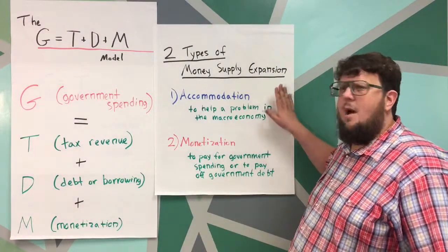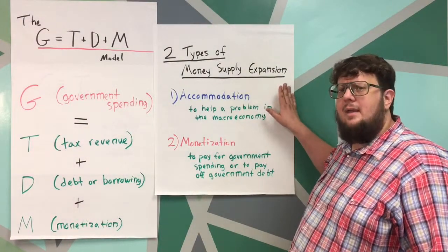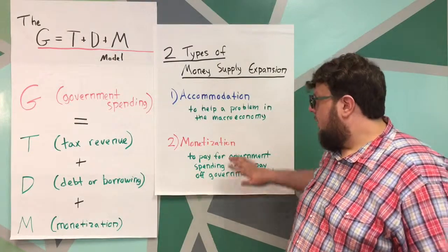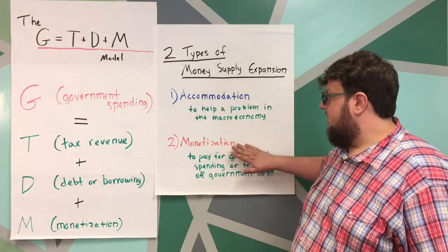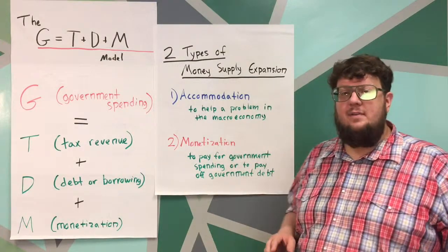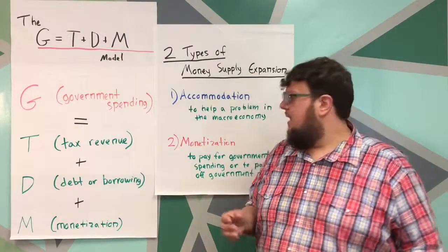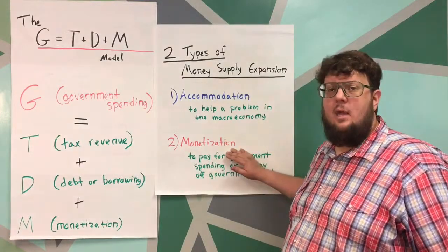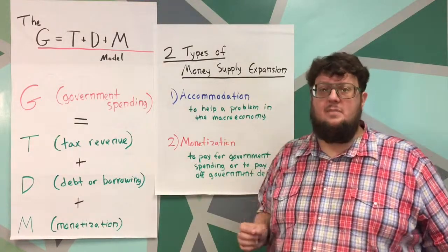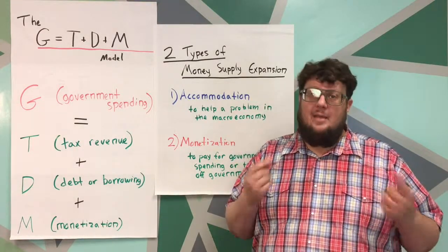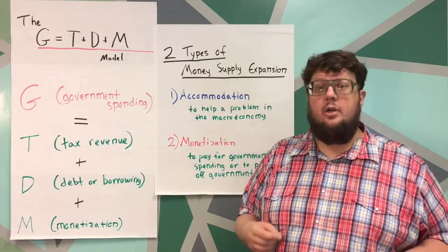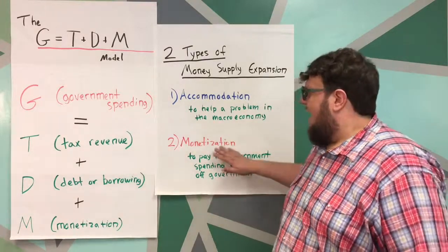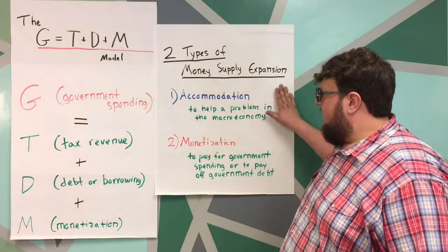If we are accommodating a problem in the economy, we don't need to worry about the things we worry about with monetization. From the previous video, I briefly mentioned that a consequence of printing money for the purposes of spending it is that you're going to debase your currency — you're going to get inflation. That is not the case with accommodation.